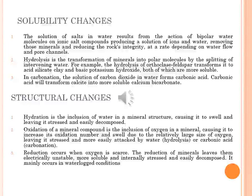Chemical decomposition and structural changes result when minerals are made soluble by water or changed in structure. The solution of salts in water results from the action of bipolar water molecules on ionic salt compounds, producing a solution of ions in water. This removes those minerals and reduces rock integrity at a rate depending on water flow and pore channels. The next change is hydrolysis — the transformation of minerals into polar molecules by splitting intervening water — resulting in a soluble acid-base pair. For example, hydrolysis of orthoclase feldspar transforms it into silicate clay and basic potassium hydroxide, both of which are soluble.